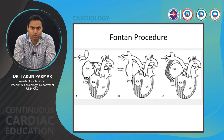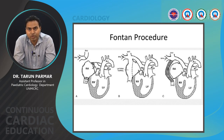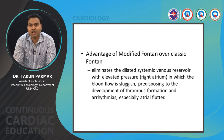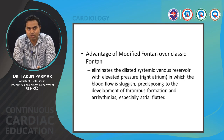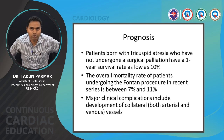The final operation in all single-ventricle physiology patients is the Fontan procedure. There are different types: the classic Fontan (A), the lateral tunnel Fontan (B), and the extracardiac conduit Fontan (C). Currently, the extracardiac conduit Fontan is preferred. The advantage of the modified/extracardiac Fontan over the classic Fontan is that it eliminates the dilated systemic venous reservoir (the right atrium), which otherwise leads to sluggish blood flow, thrombus formation, dilatation, and arrhythmias such as atrial flutter.